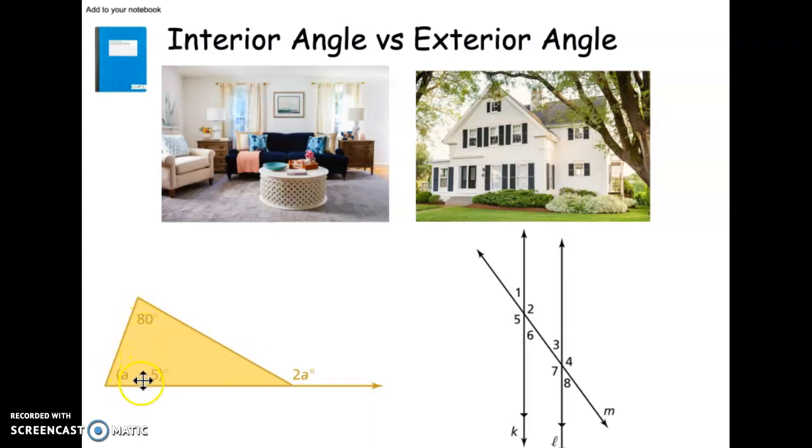And then we have two interior angles of 80 degrees and a minus 5 degrees. So, those are interior angles. The 2a is exterior. Here, with this transversal and two parallel lines that we saw in yesterday's work, we have 8 angles. We have 4 interior, 4 exterior.